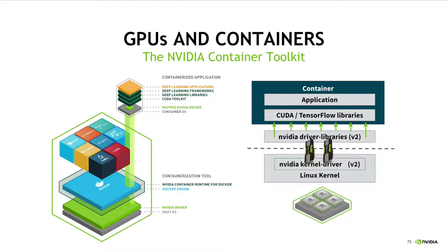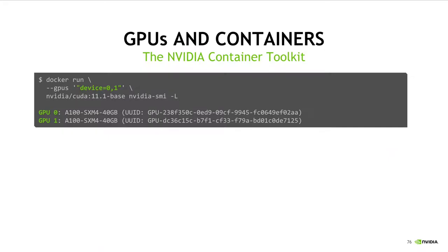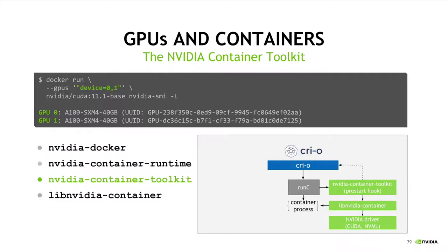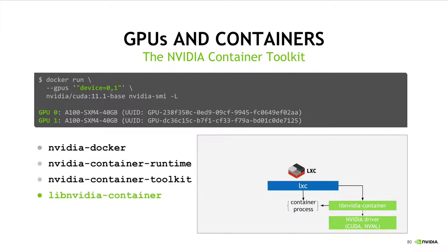To solve for this, we provide a package called the NVIDIA container toolkit, which takes care to ensure that compatible NVIDIA driver libraries are injected into a container at runtime, as well as giving applications access to any required GPU hardware. Many of you have likely interacted with the NVIDIA container toolkit through a Docker command that launches a container with specific GPUs injected into it. This command hooks into a component called NVIDIA Docker, which is just one small piece of the overall NVIDIA container toolkit. The toolkit itself consists of a stack of components, allowing GPUs to be used by many different container runtimes.